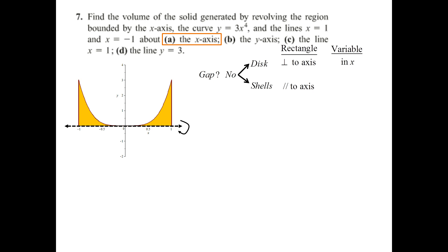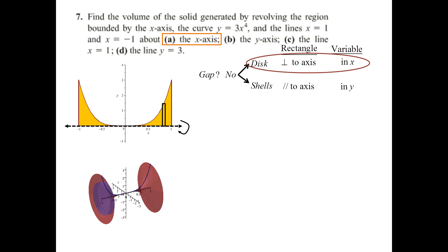It'll be in x if you are using disk, and you'll be in y if you're using shells in this case. I'll first show you how it sets up with disk, and then with shells, just to show the difference. In this case, one is a lot better than the other. We draw a typical rectangle perpendicular to the axis — we're going to be in x, because this rectangle moves from left to right. Here's the animation: 10 discrete disks that approximate the volume. The formula is pi times the integral from a to b of the radius squared, so we just need the radius.